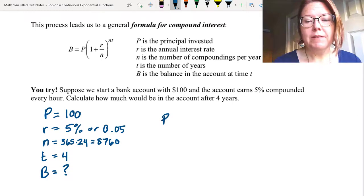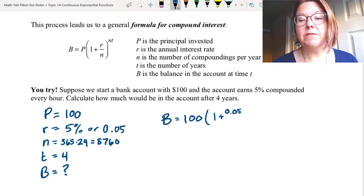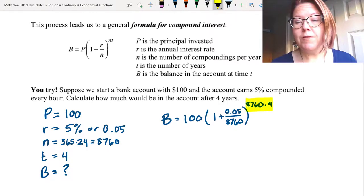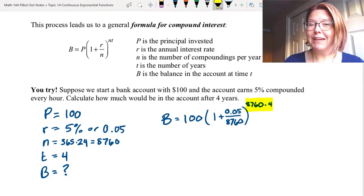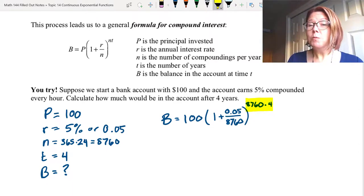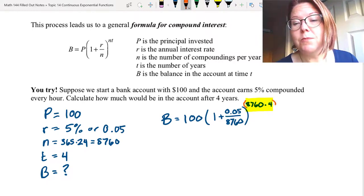Let's assemble the formula now. The balance after four years is going to be 100 times (1 plus, and then r over n, so 0.05 divided by 8760). Close the parentheses and raise that to the nt power. So the power is 8760 times 4. Now if you're doing this calculation in Desmos, be very careful with that exponent and the multiplication. Desmos wants to bring the times 4 down out of the exponent. You may need to put that exponent in parentheses to make sure that it gets evaluated properly.